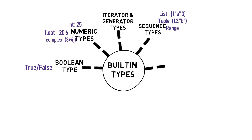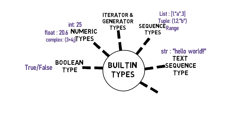Then we have the text sequence type, which is nothing but the string type. Then we have the binary sequence types, which includes bytes, byte array, and memory view.